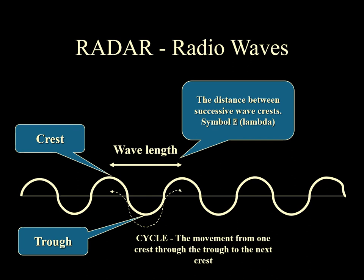The marine radar commonly operates on two centimetric wavelengths. One is the X-band, which operates on the 3 centimeter wavelength, and the other operates on the 10 centimeter wavelength. The height from the crest to the trough is the amplitude of the wave, which basically defines the energy of the wave and how far the wave can be transmitted.